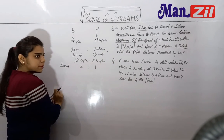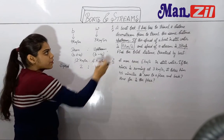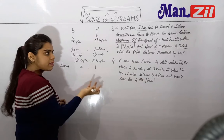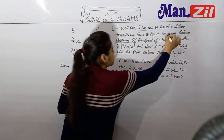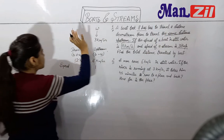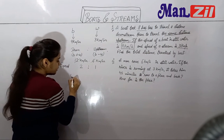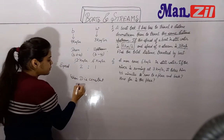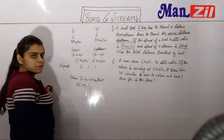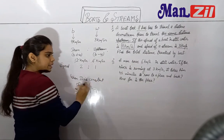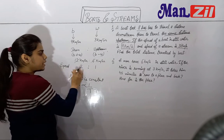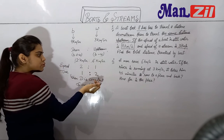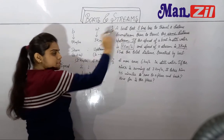Now what is the ratio of downstream time and upstream time? We have the speed ratio, but we need the time ratio. Since the distance is the same in this question — same distance case — when distance is constant, speed is always inversely proportional to time. So if the ratio of speed is 2 ratio 1, then the ratio of time is 1 ratio 2.